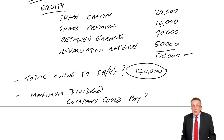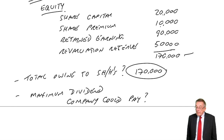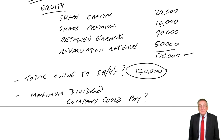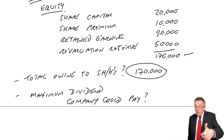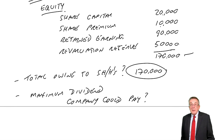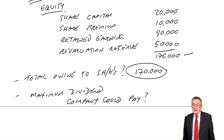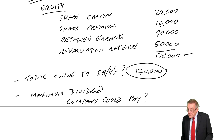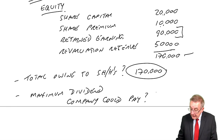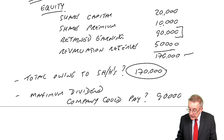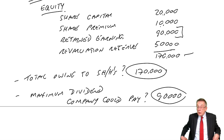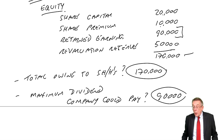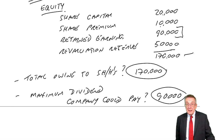The total owing to shareholders is £170,000 — all of those are owing to shareholders, that's the total capital, the total equity. What's the maximum dividend the company can pay? Remember they can't repay share capital as dividend, and share premium and revaluation reserve are capital reserves — they cannot be paid out as dividend. The most that can be paid as dividend is the revenue reserve: £90,000. Companies won't usually pay it all out, but legally the maximum dividend is £90,000.